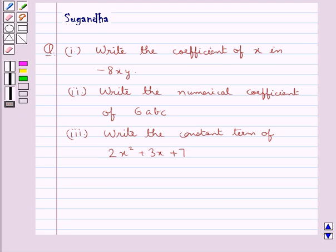In this session we discuss the following question which says write the coefficient of x in -8xy. Then the second part of the question is write the numerical coefficient of 6abc. The third part of the question is write the constant term of 2x² + 3x + 7.